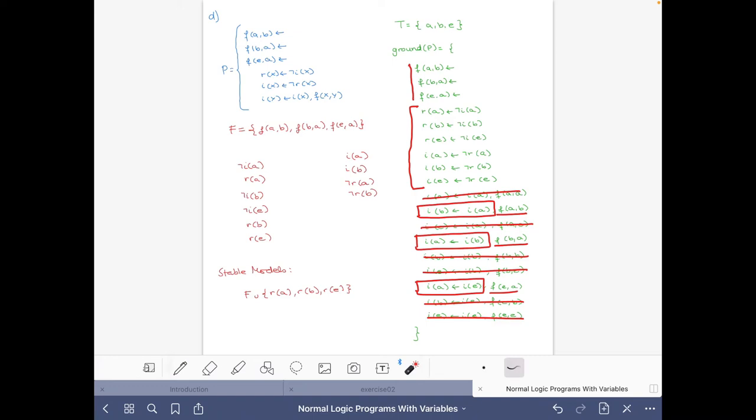And now about R(e), we don't know. We have these two rules, but we cannot conclude anything because from here I(a) is in the stable model but it's justified already by other rules, like for example with this rule. So then we can reason by cases and see what would happen if I(e) was not there and what would happen if it was indeed there. For this case without I(e), we derive R(e).